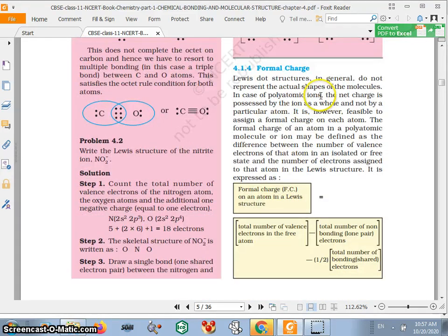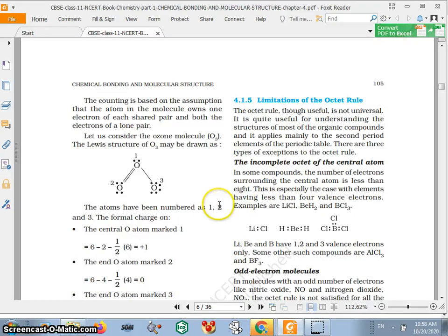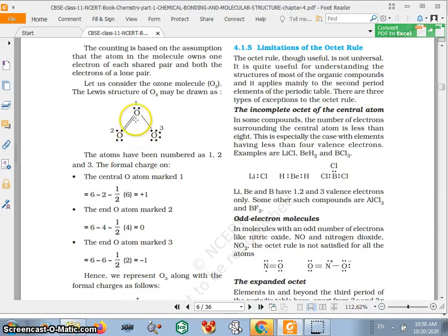So friend, formal charge. What is the formal charge? Formal charge on an atom in a Lewis structure is equal to total number of valence electrons in the free atom minus total number of non-bonding lone pair electrons minus half total number of bonding shared electrons. This is the formula of formal charge, we call it FC. Now you can see we have the ozone, so three atoms, and you can check with the atom.